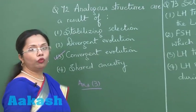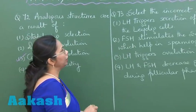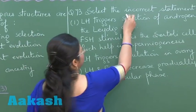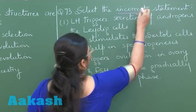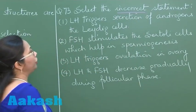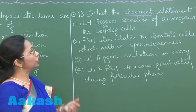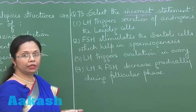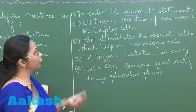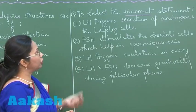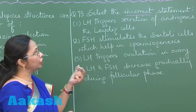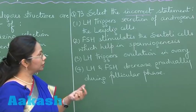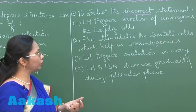Moving on to question 73 — select the incorrect statement. LH triggers secretion of androgens from Leydig cells: absolutely correct. FSH stimulates the Sertoli cells, which help in spermiogenesis: also absolutely correct.